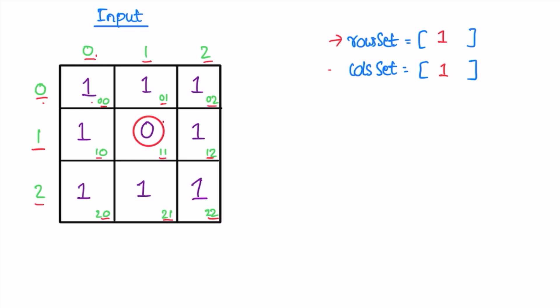Now we have two flags: row set and column set. We need to change the input matrix in place without creating a new matrix. We iterate again from row zero and column zero. Element (0,0) — zero is not in either set, so we move on. Element (0,1) — column one is present in column set, so we change that element to zero. Element (0,2) — not present in either set, so we move further.